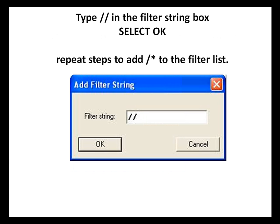Repeat the steps to add slash asterisk to the filter list. This will allow all JCL lines to be ignored.